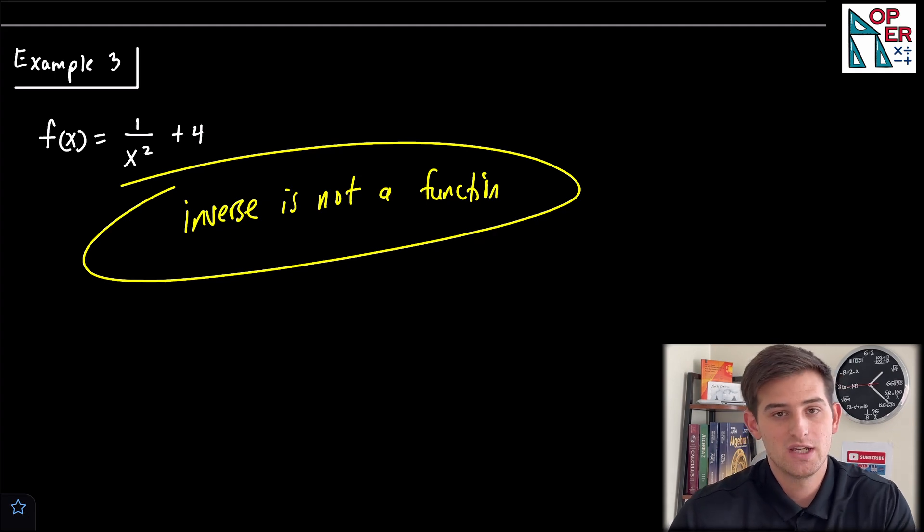So make sure you check, see if the graph passes the horizontal line test first. If it does, go ahead and switch the roles of X and Y, solve the equation for y. If it doesn't, then say, hey, this inverse is not a function. And that's how you can find inverses of rational functions.